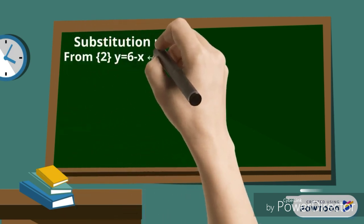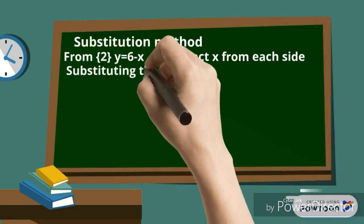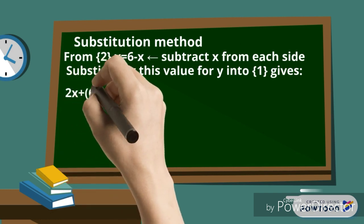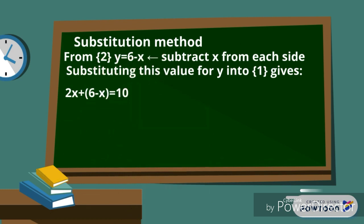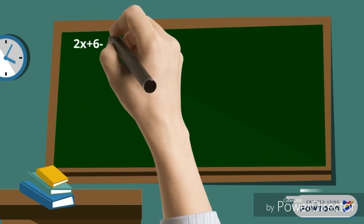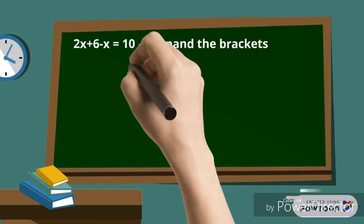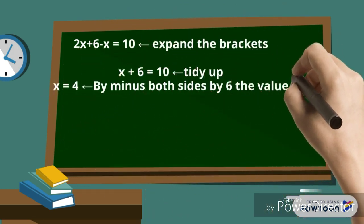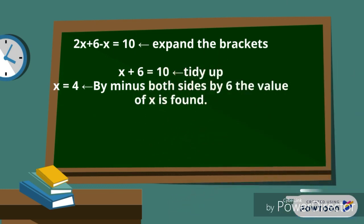Using the substitution method with these 2 equations: 2x plus 6 minus x equals 10. We find x plus 6 equals 10. After that, we find x equals 4.